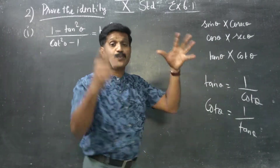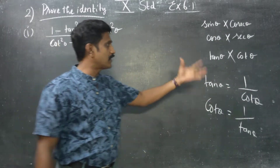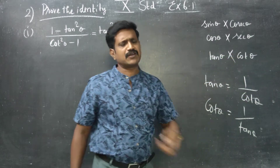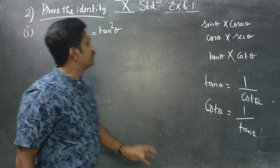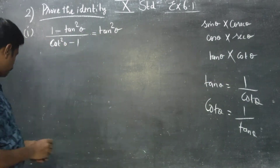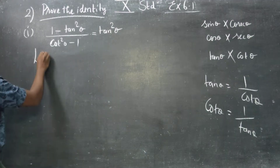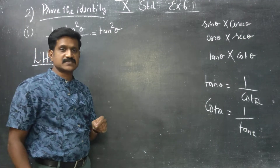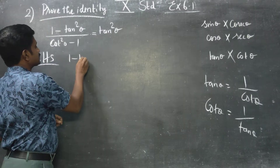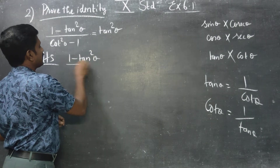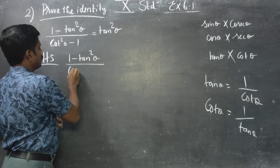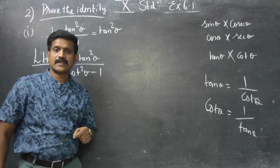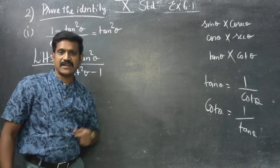This is a reciprocal formula. Now I am going to start my LHS. My LHS is: 1 minus tan square theta, divided by cot square theta minus 1. This is my LHS.